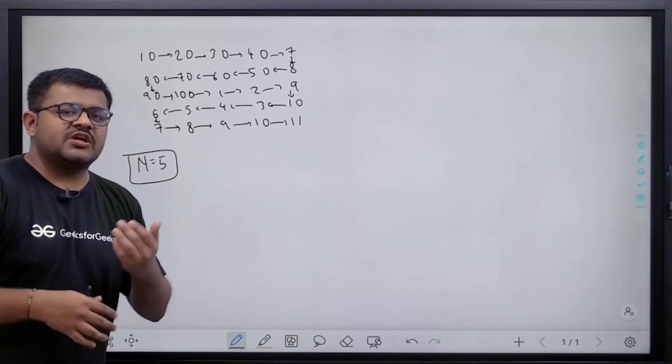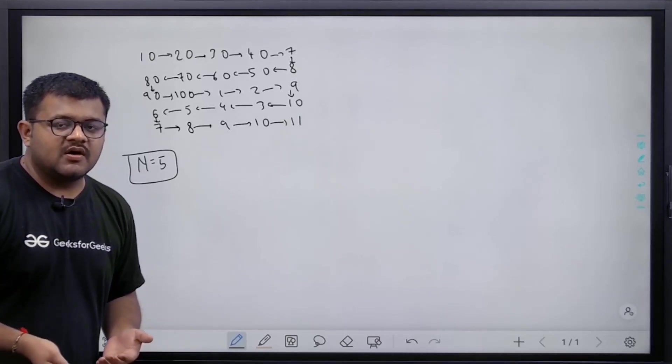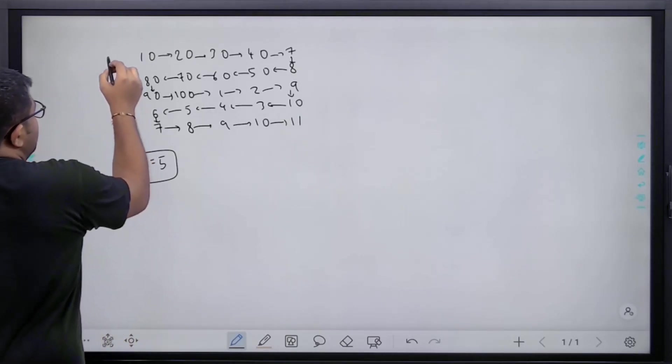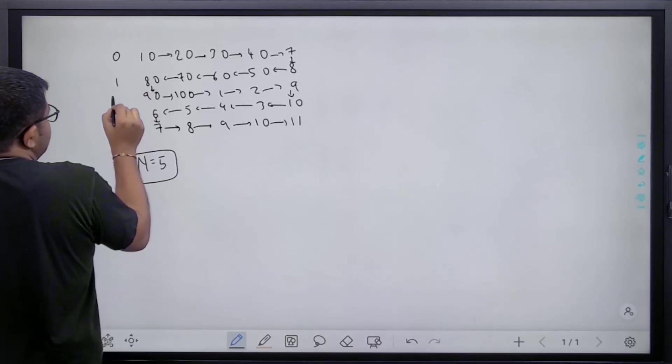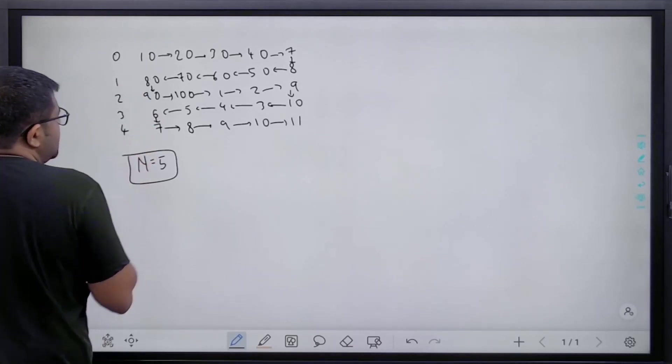This statement only contains the solution. Basically, let us say this is 0th row, this is 1st row, this is 2nd row, this is 3rd row, and this is 4th row.